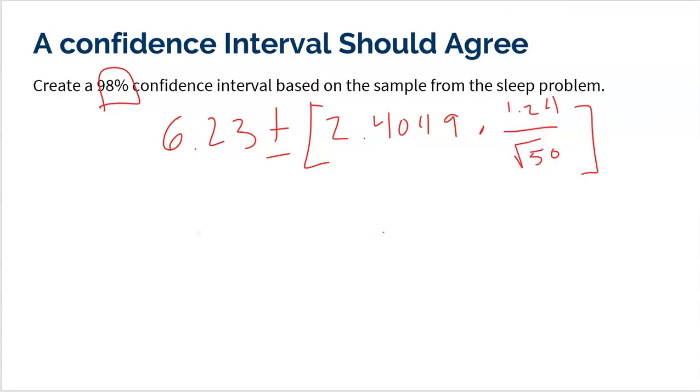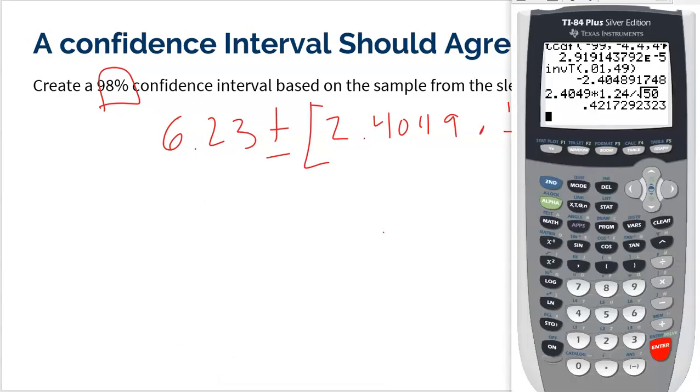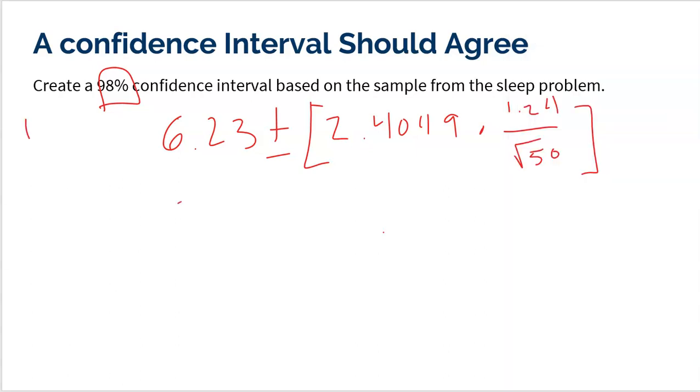I'm going to do the 2.4049, and I'm going to multiply that by the 1.24 standard deviation divided by the square root of my sample size, 50. And that's my margin of error, 0.422. So I have 6.23 plus or minus the 0.422 that I just got.